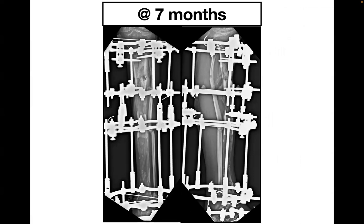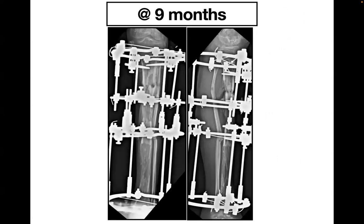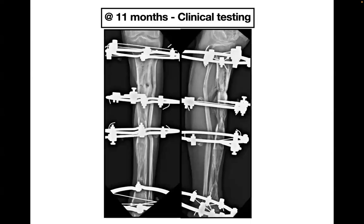At the docking stage, the docking site was well aligned and there was a residual translation between the 2nd and 3rd rings which was addressed with oblique hinges. Overall alignment was good and regenerate consolidation was in progress. At 7 months, good consolidation was ongoing at the docking site; at 9 months the same good progress of healing was observed. At 11 months, clinical testing was performed — rods at the docking site and regenerate consolidation site were removed and the fracture was checked clinically for reunion and regenerate solidity, assessing for abnormal movement in both frontal and sagittal planes.